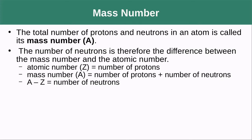The mass number is the total number of protons and neutrons in the atom. Since protons and neutrons have the majority of the mass and the electron's mass is negligible, we define mass number as just the count of protons and neutrons. Because each is roughly 1 AMU, the mass number is very close to the actual atomic mass. To get the number of neutrons, we subtract the atomic number from the mass number.